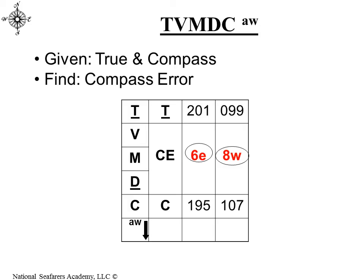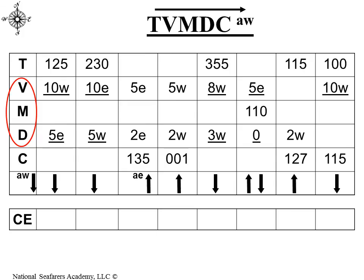Here's an example: if you were given true and given compass, the difference would be the compass error. In the first example, if the true heading was 201 and the compass heading was 195, you can see the difference of six. Going down, it's a subtraction of six, so that would be easterly. Likewise, if it was 099 true compared to compass 107 — that's a difference of eight, and it would be westerly because you'd have to add to get from 99 to 107. If you take variation and deviation as a whole, skipping from true to compass, that would be the compass error.